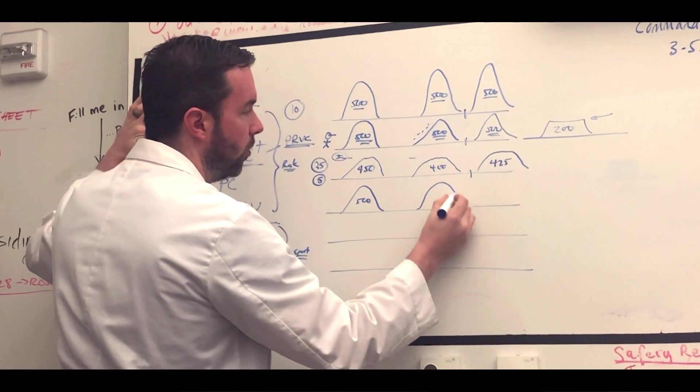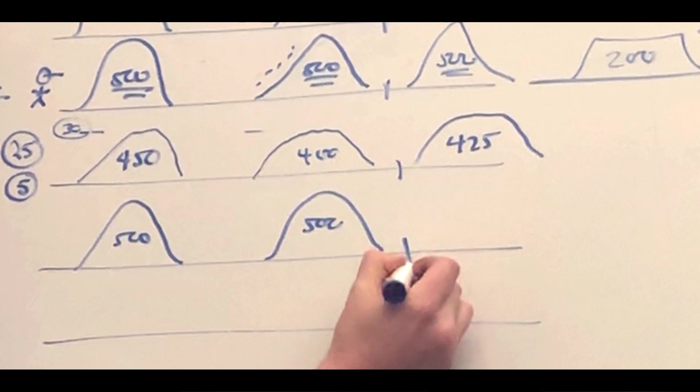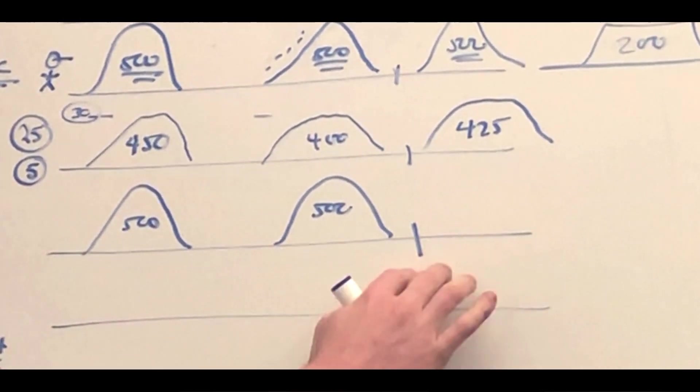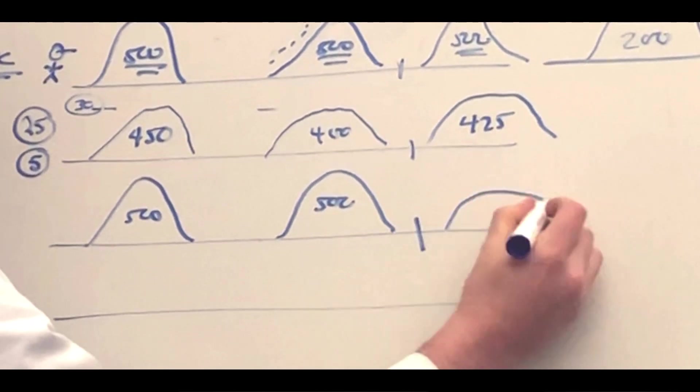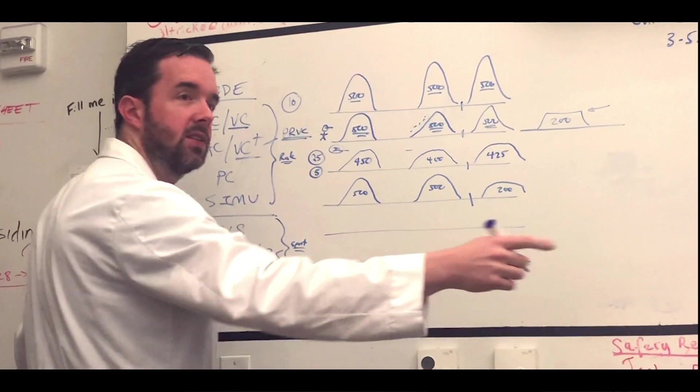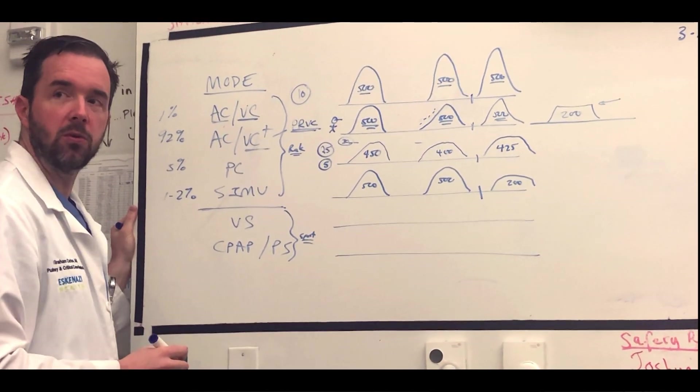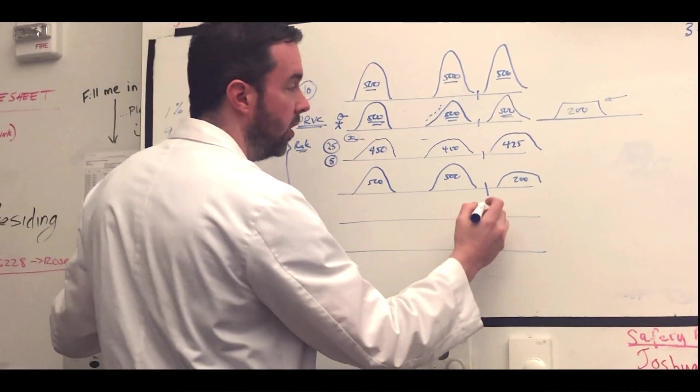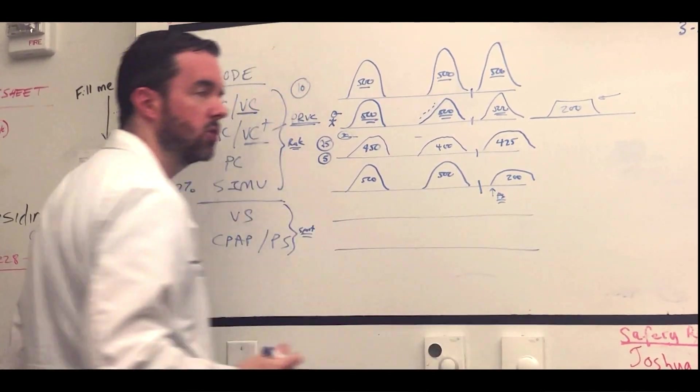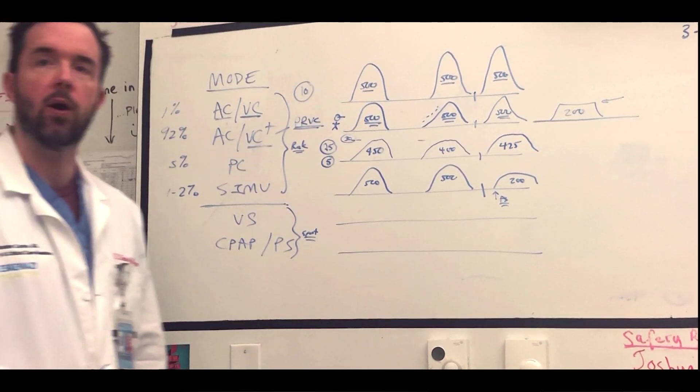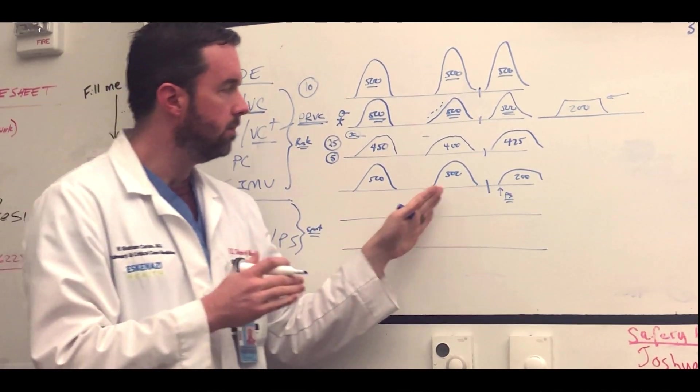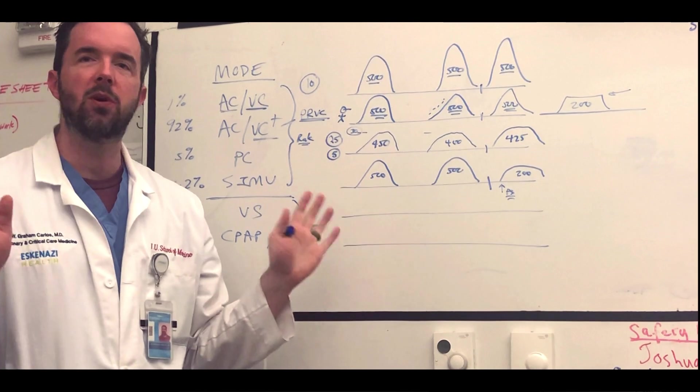You get that at whatever rate has been set. The difference comes on the not the spontaneous but the extra breath. On the extra breath, you get what you can do. On the extra breath, the one over the set rate, you get what you can do. It's called SIMV plus pressure support, which gives some pressure support on these extra breaths to augment them. But this is a key difference, and because you'll see patients bounce back and forth with different volumes, we don't use it a lot in the ICU.